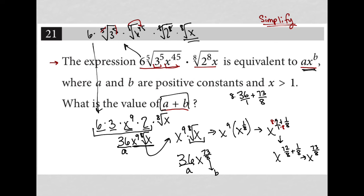This leads to 288/8 plus 73/8. And my calculator, 288 plus 73 is 361. I get 361/8.